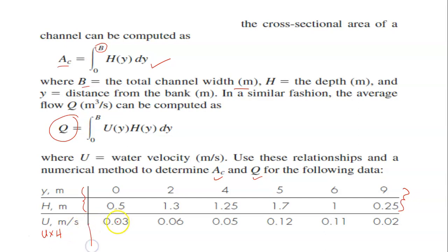And how to get the data, you just multiply the value of 0.5, so this one is 0.5 times 0.03, and for this one, it's 1.3 times 0.06, and so on. You just need to multiply these two data together, and you'll get the value.